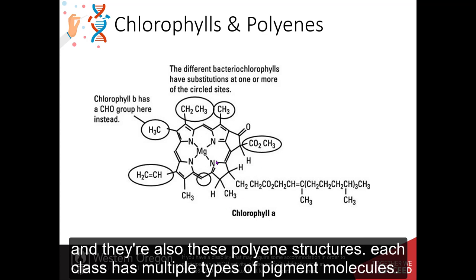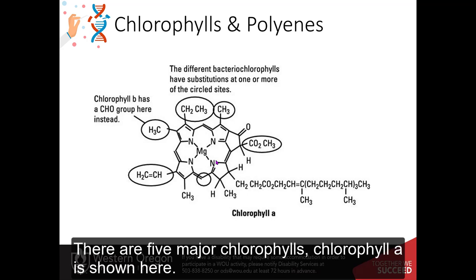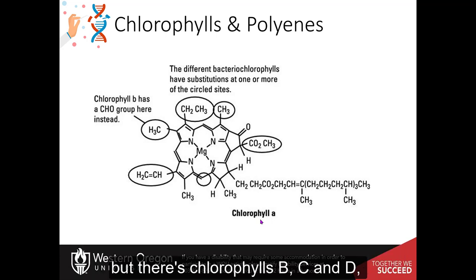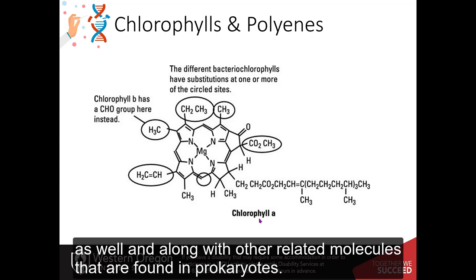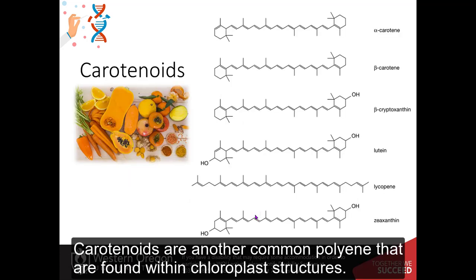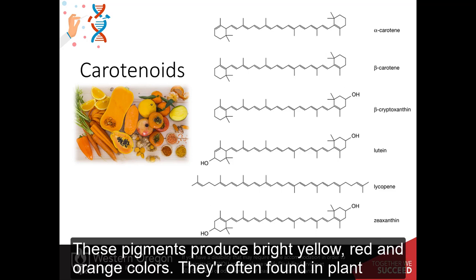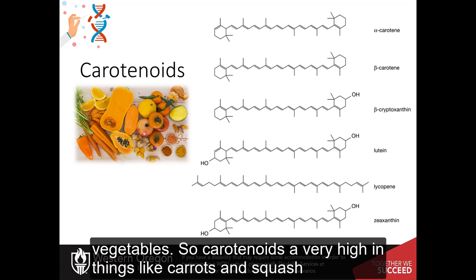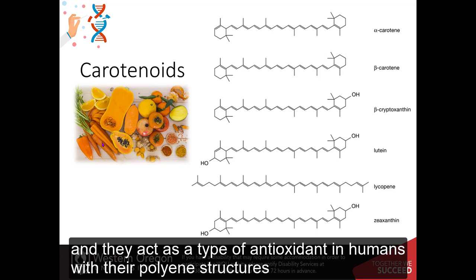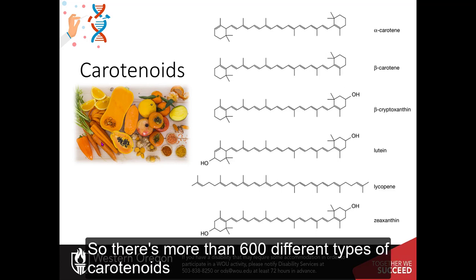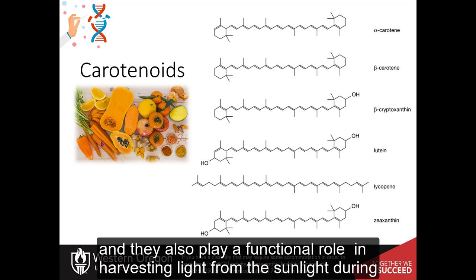So the chlorophylls and the carotenoids are our two major classes of photosynthetic pigments that are found in plants and algae, and they are also these polyene structures. Each class has multiple types of pigment molecules. There's five major chlorophylls. Chlorophyll A is shown here, but there's chlorophylls B, C, and D as well, and along with other related molecules that are found in prokaryotes called the bacteriochlorophylls. Carotenoids are another common polyene that are found within chloroplast structures. These pigments produce bright yellow, red, and orange colors. They're often found in plant vegetables, so carotenoids are very high in things like carrots and squash, and they act as a type of antioxidant in humans, and that's due to their polyene structure. So there's more than 600 different types of carotenoids, and they also play a functional role in harvesting light from the sunlight during the process of photosynthesis.